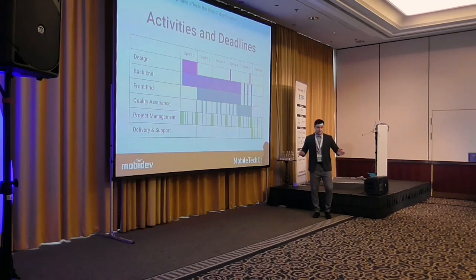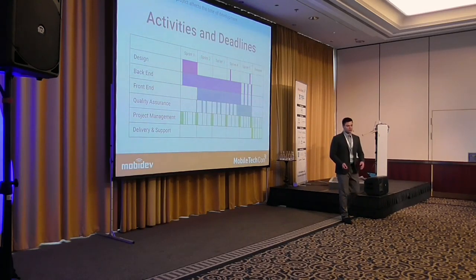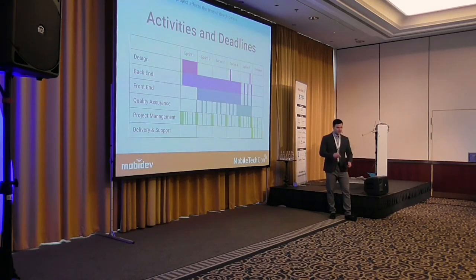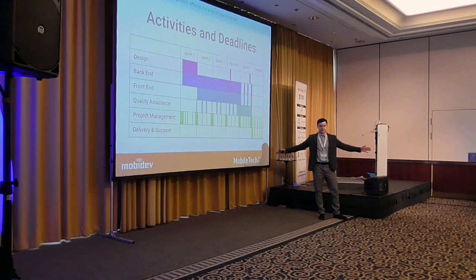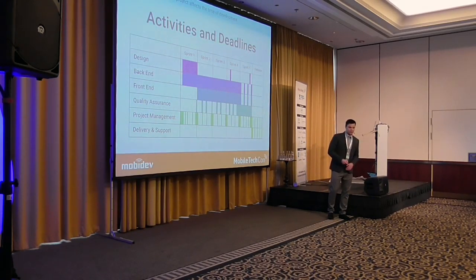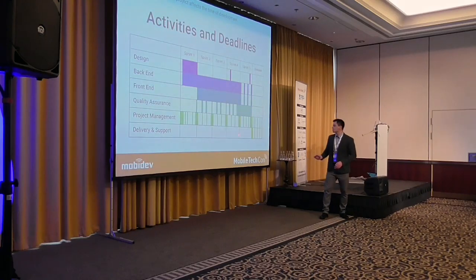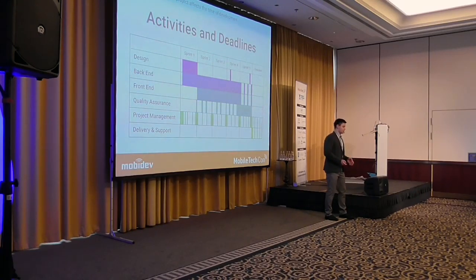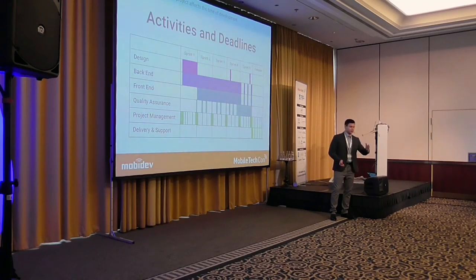During quality assurance, testers check the system under proper and improper operation. This is necessary because if a user inputs incorrect data and the application doesn't tell them what's wrong, the user becomes frustrated. The project manager organizes the whole development process, communicates with product owners and teammates, and provides tasks. After that comes delivery and support, where applications are published to the App Store and Google Play, the backend is deployed, and QA checks the system under real conditions.